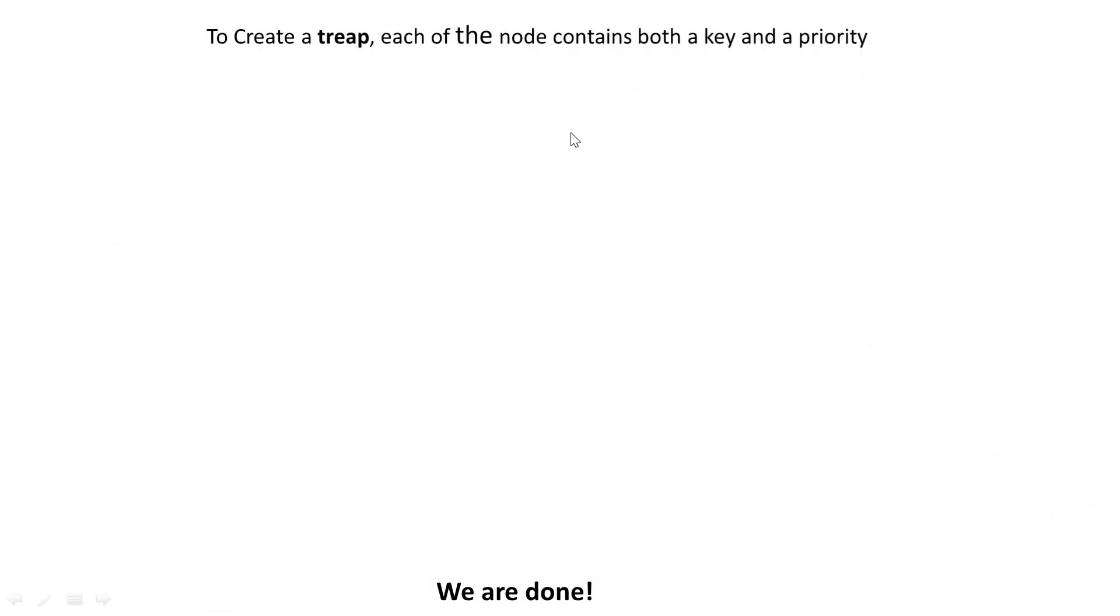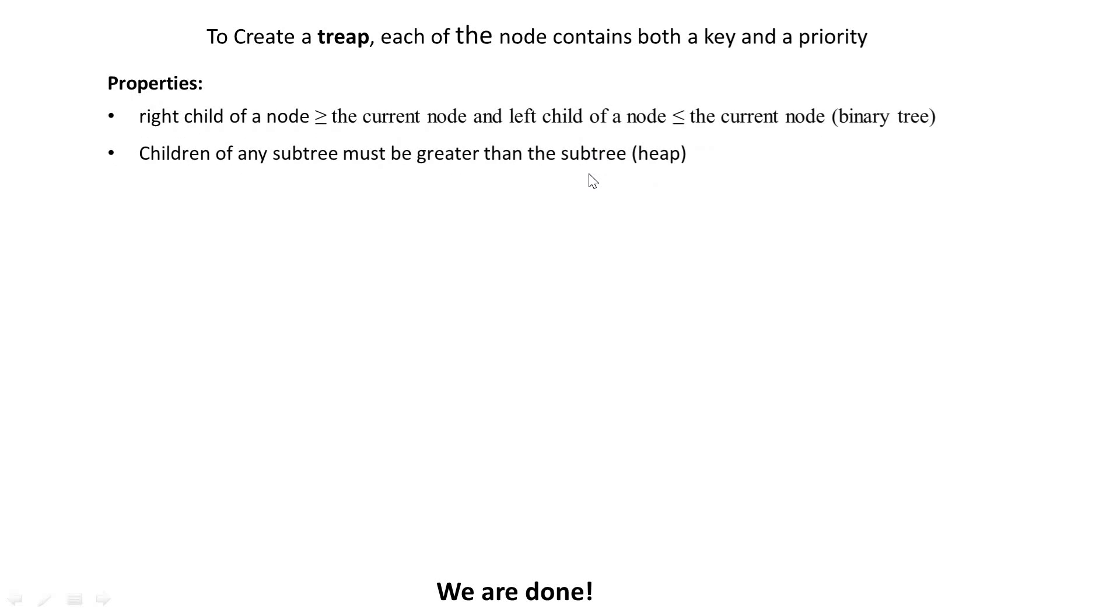So to create a treap, each of the nodes must contain both a key and a priority. The priority derived from the heap and the key derived from the binary tree. We can always take an example to illustrate it. Properties of a treap is a property of a binary tree where the right child is greater than the current node and the left child is less than the current node. And the children of the subtree must be greater than the subtree or the node.